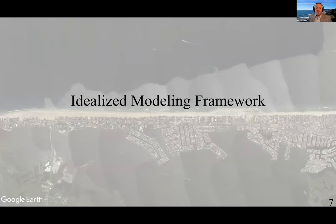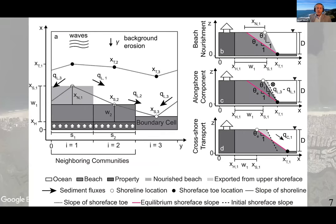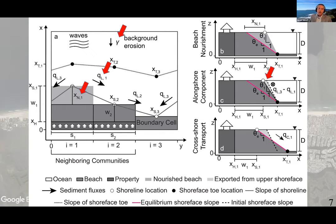I explored these questions using an idealized modeling framework. There are three alongshore cells in the model domain: two neighboring communities, i=1 and i=2, and one boundary cell, i=3, that proxies an adjacent natural coast. In response to background erosion, the communities can nourish their beaches, forming an ephemeral seaward protrusion and triggering longshore sediment transport based on the coastline's gradient, denoted by the solid line connecting the white circles, relative to the angle of wave approach. The sediment is taken from the upper shoreface or subaerial beach in seaward cells, and deposited at the shoreline in landward cells, with a periodic condition at the system's boundary such that any sediments leaving one edge (QL3) are received at the other.